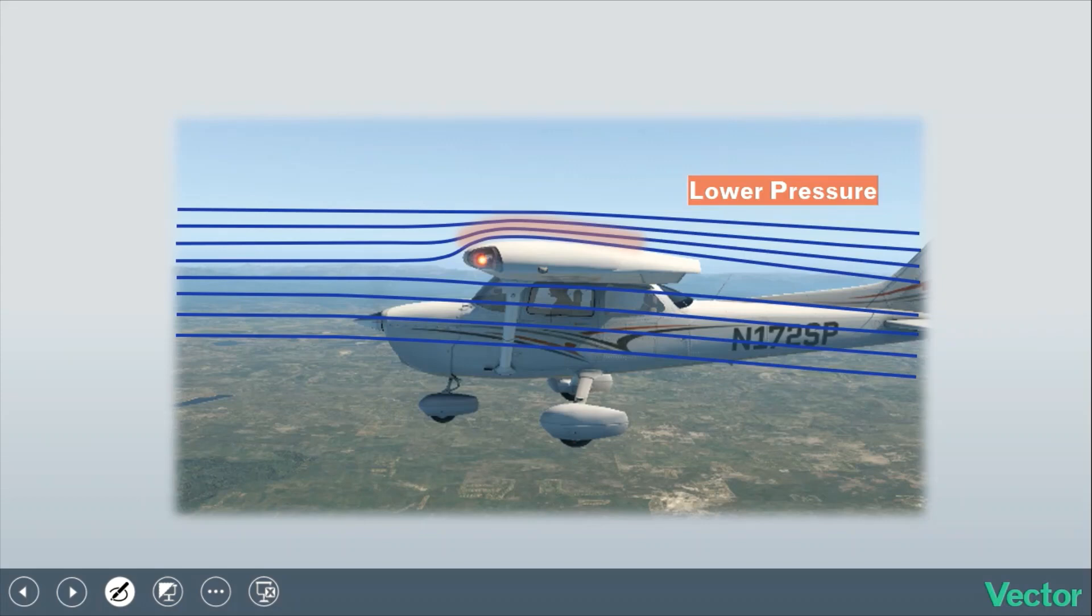For our purposes, we just want to understand the general principles. So all we want to take away from this is that the airflow over the upper surface speeds up, generally because of the shape of the wing.